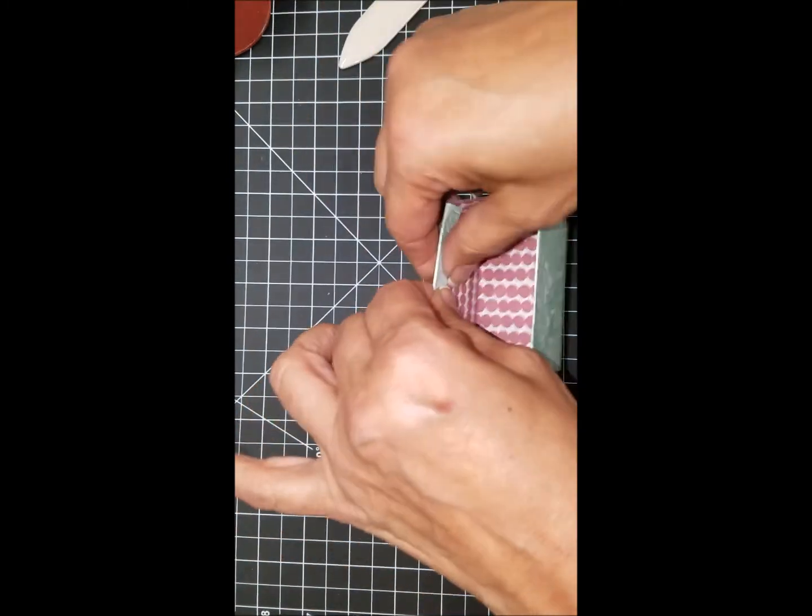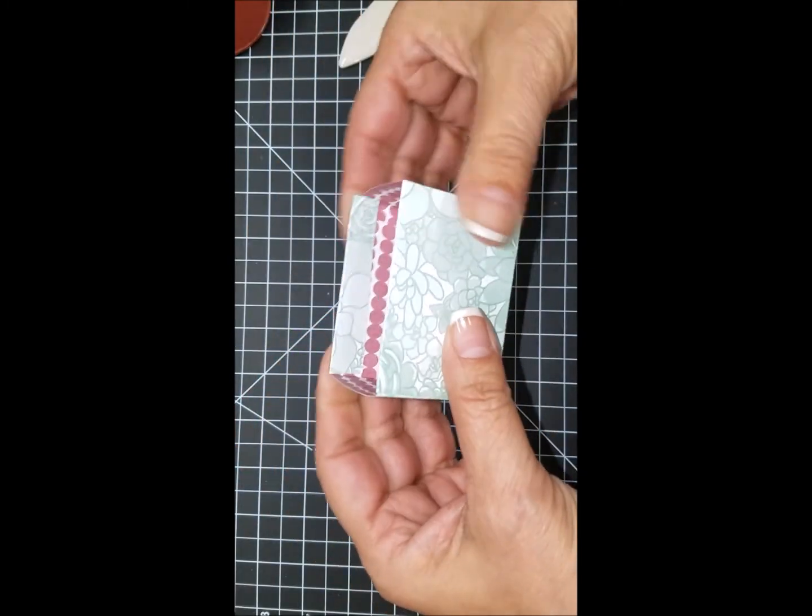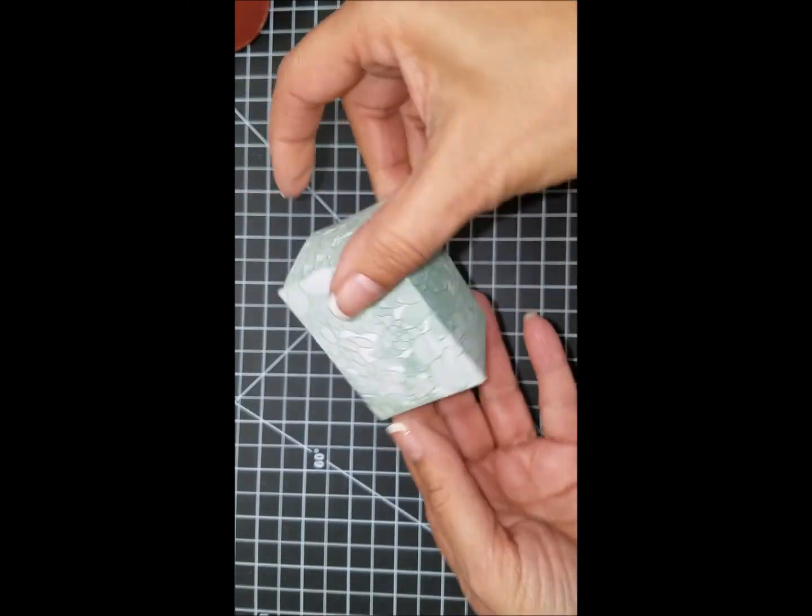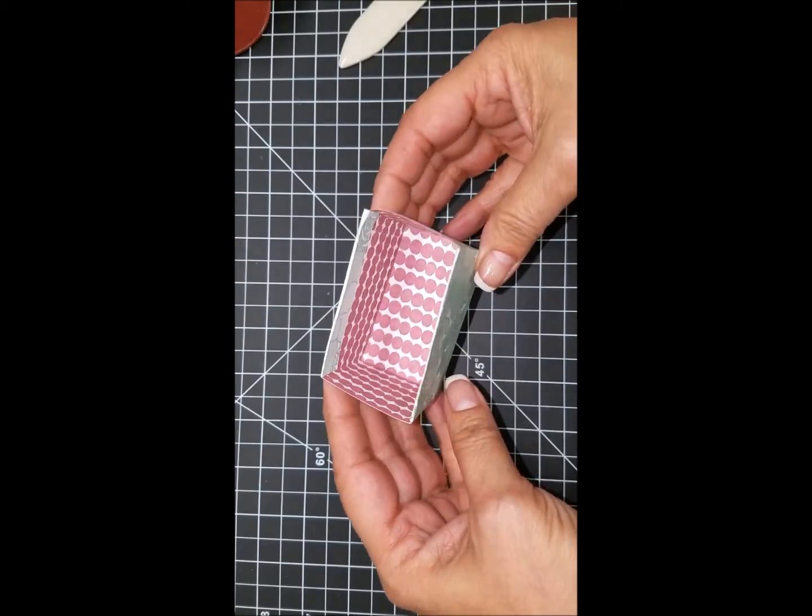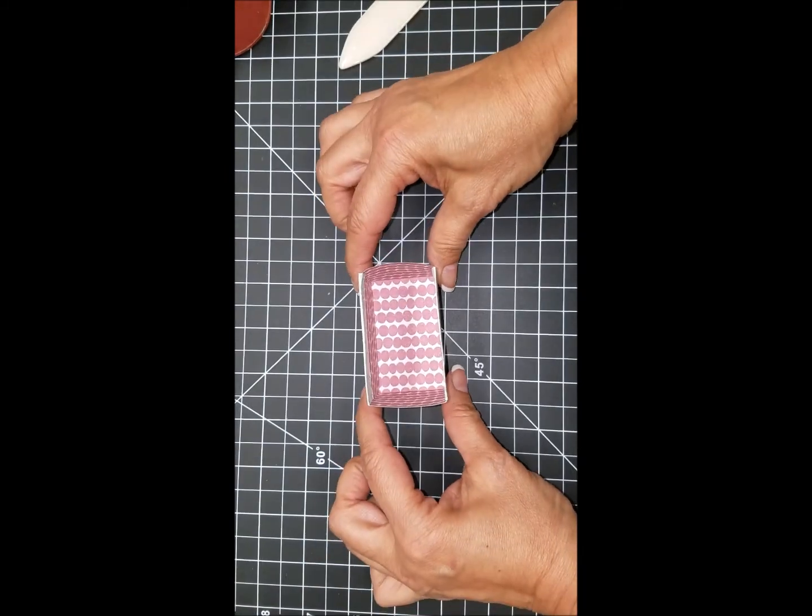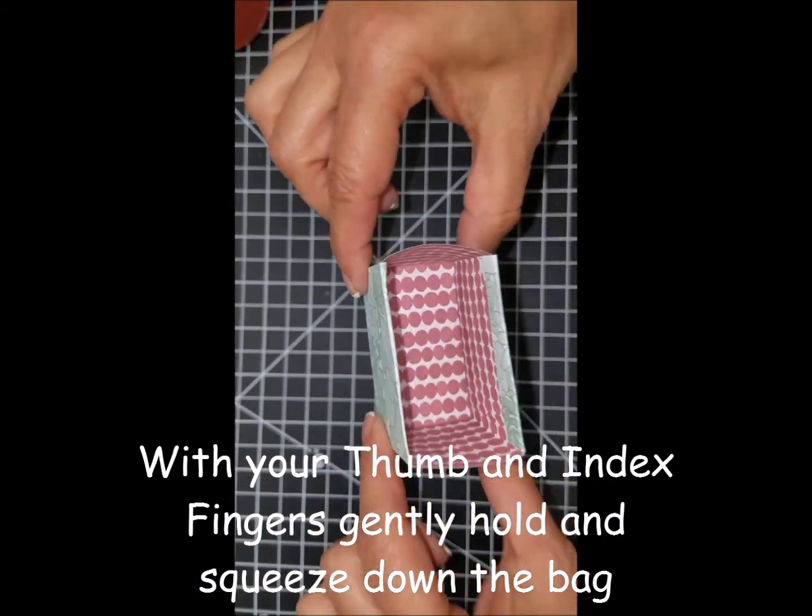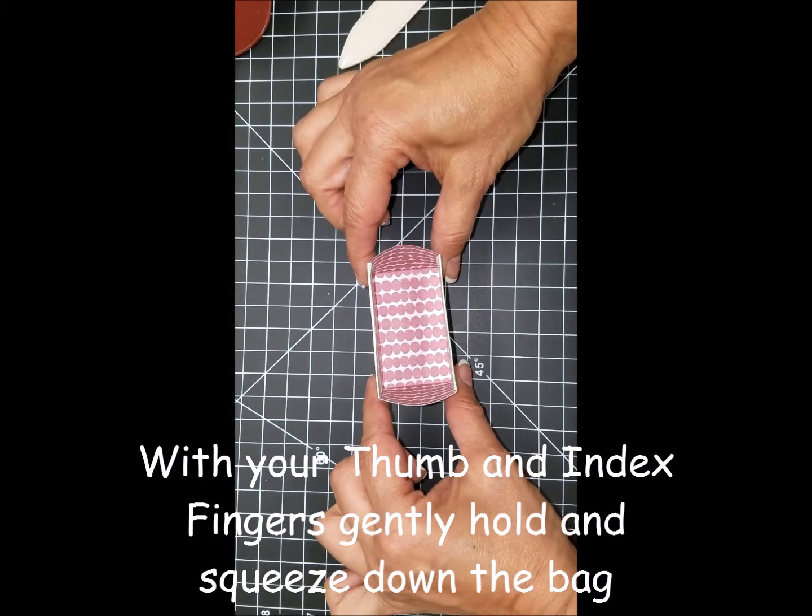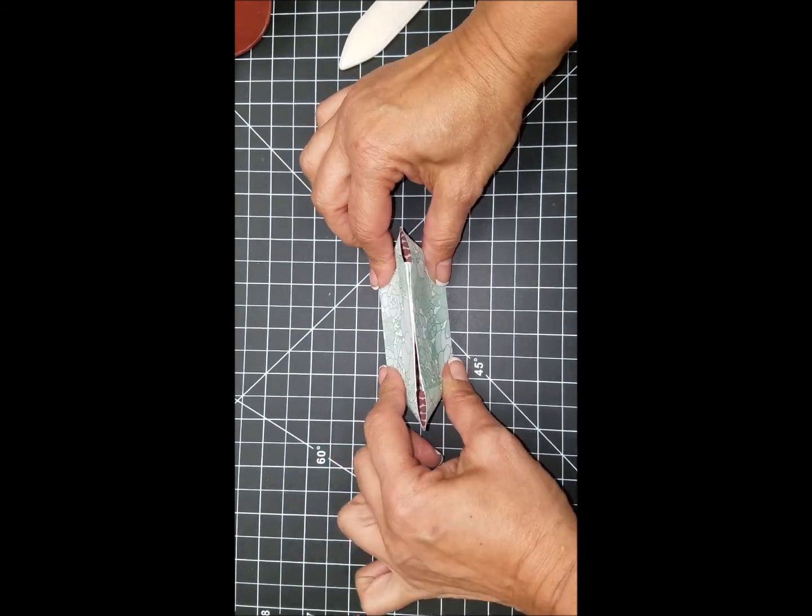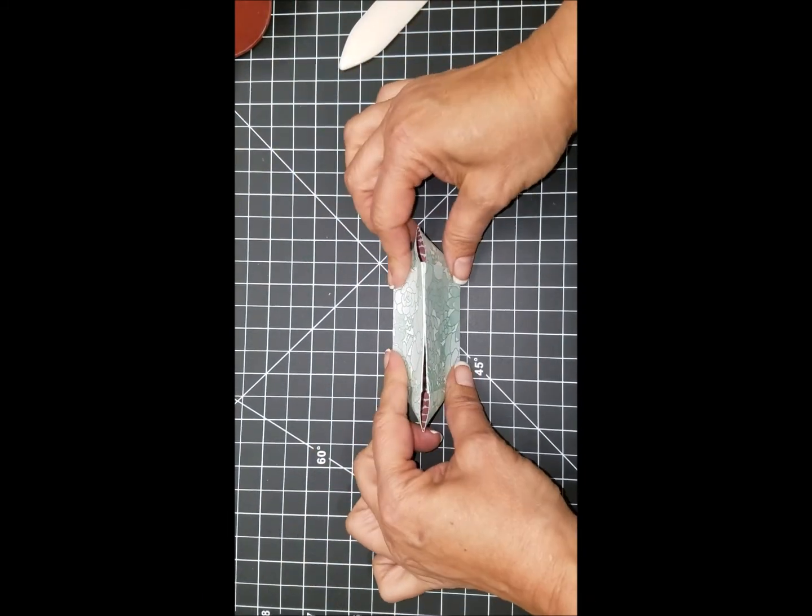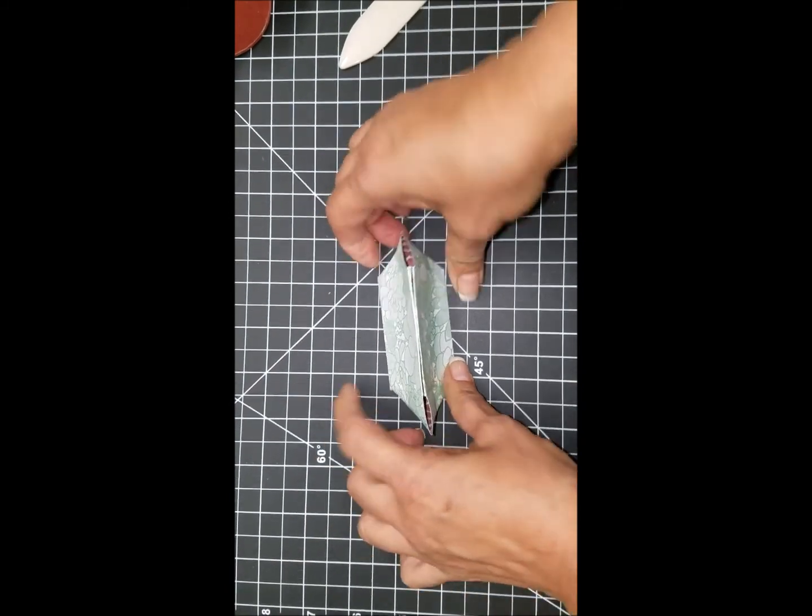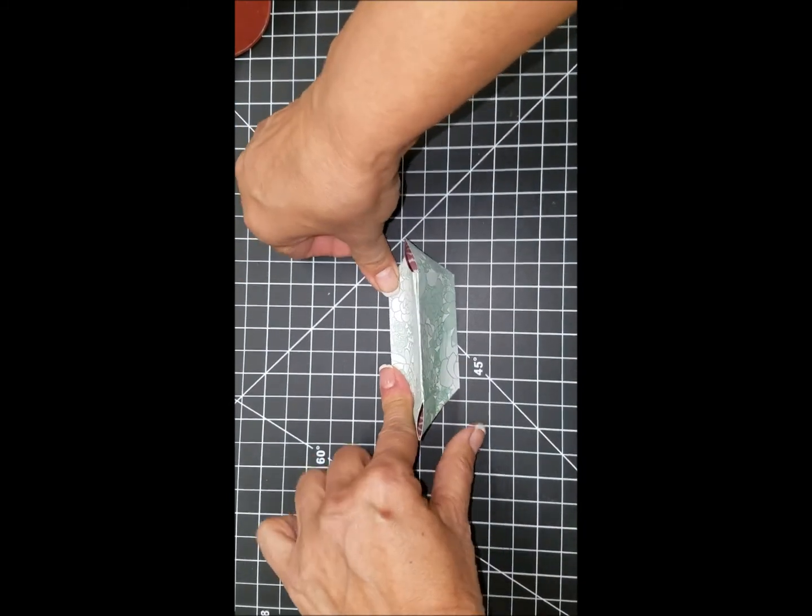Now to get the cute little bottom, I'm going to take my thumb and index finger on both sides, one on each side, and press down on the bag and see how it creates that cute little fold on there. I just press with my thumb and my index fingers on each of those ends, and it creates my little beach bag type tote.